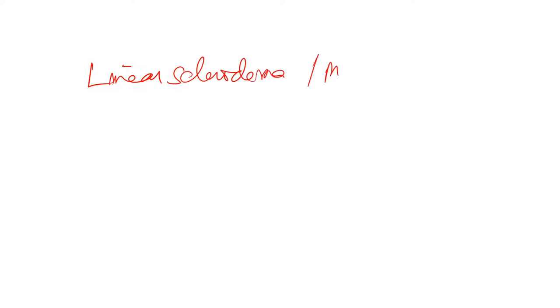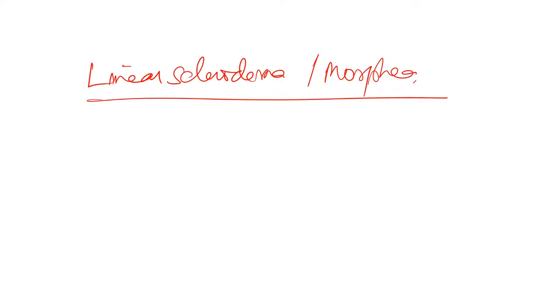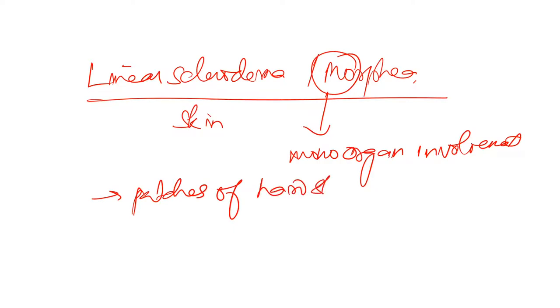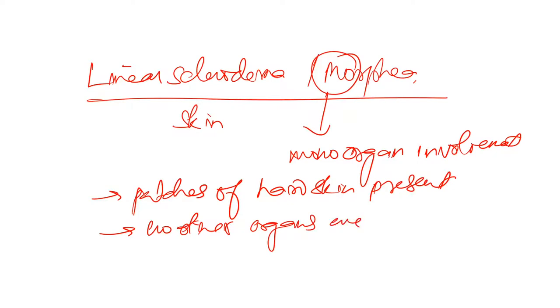In linear scleroderma, also known as morphea, only one organ is involved — the skin. There are patches of hard skin present and no other organs are involved. You can remember this as mono-organ involvement for morphea.